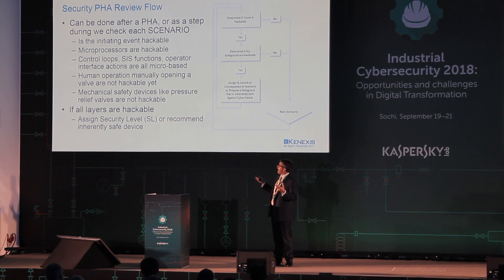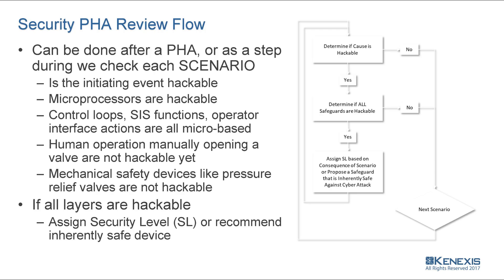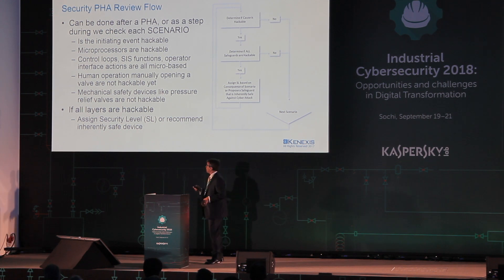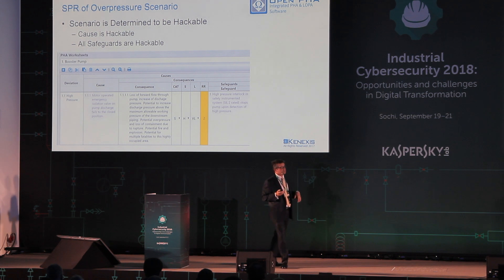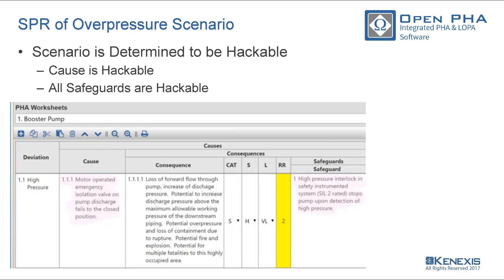There are things that are not hackable, like mechanical devices and human operations. There's some research going on now in using operator interfaces to trick people into doing things they shouldn't, but for the sake of this discussion, let's say that people are not hackable. If you go through this process and the cause is hackable and all of the safeguards are also hackable, that's bad — we have to do something about that. In the pump station case, closing the isolation valve is done by the DCS, so it's hackable, and the one safeguard — the high-pressure interlock — is also hackable. This is no good; we need to do something about it.